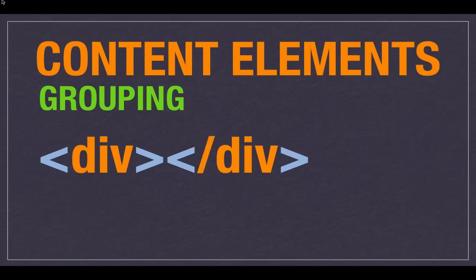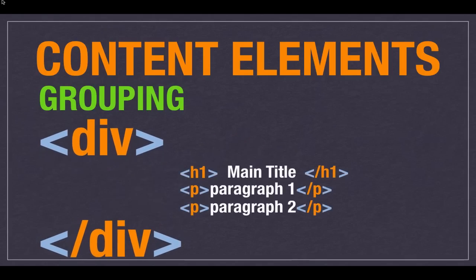So the div. Previously to HTML5, this was really the grouping element that you had. You used the div when you wanted a few different elements to all be grouped together in a logical thing — it could be your header, your content, a product that had an image and a title and a price and a description, all those things together. We often use these groupings with CSS, which we're going to learn next, to style that page and make it look how we want.